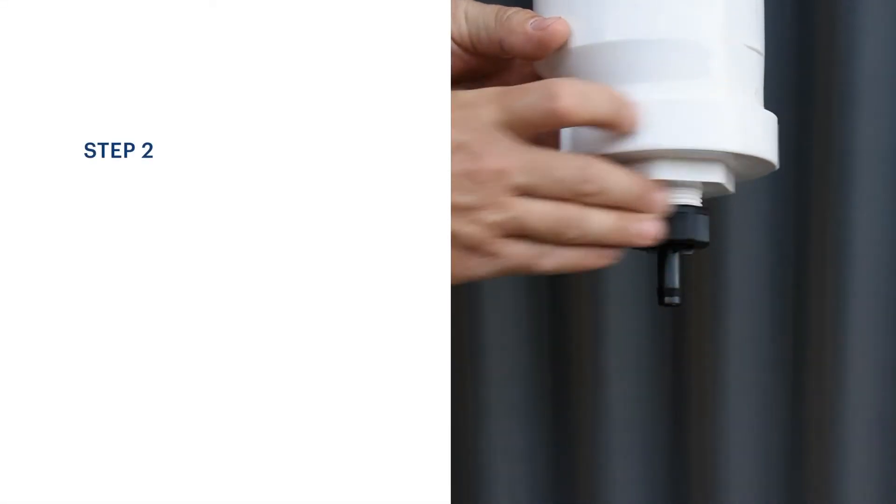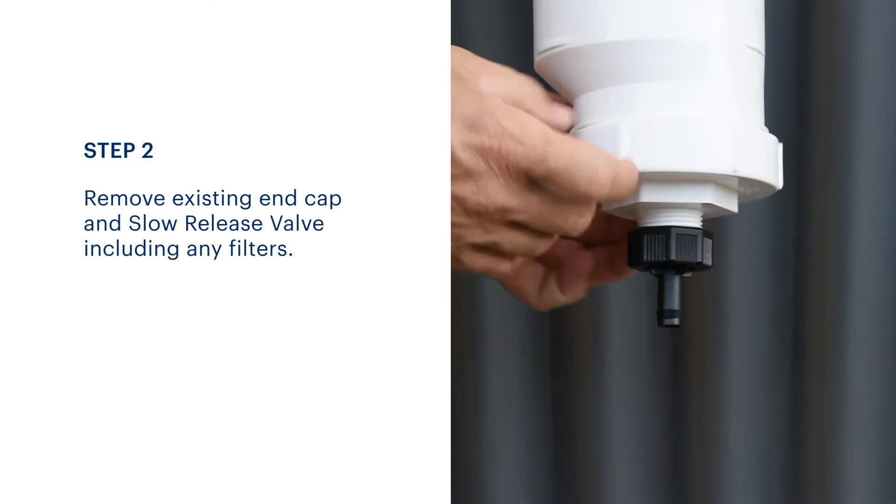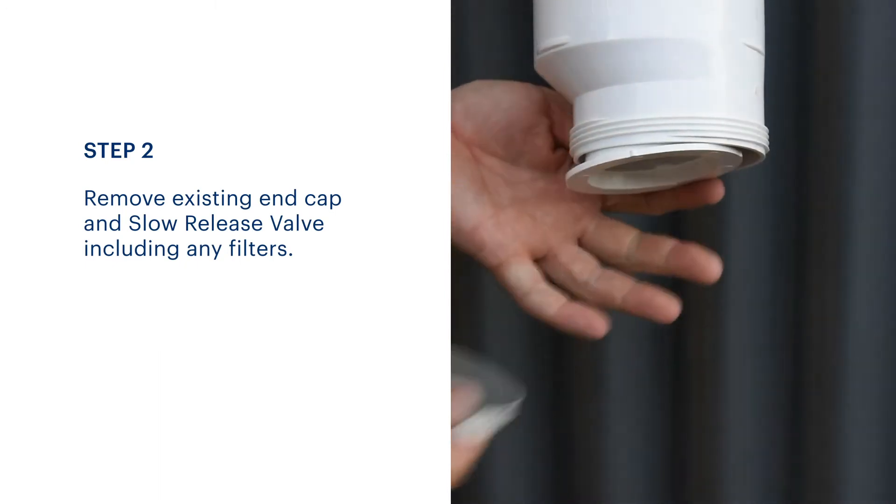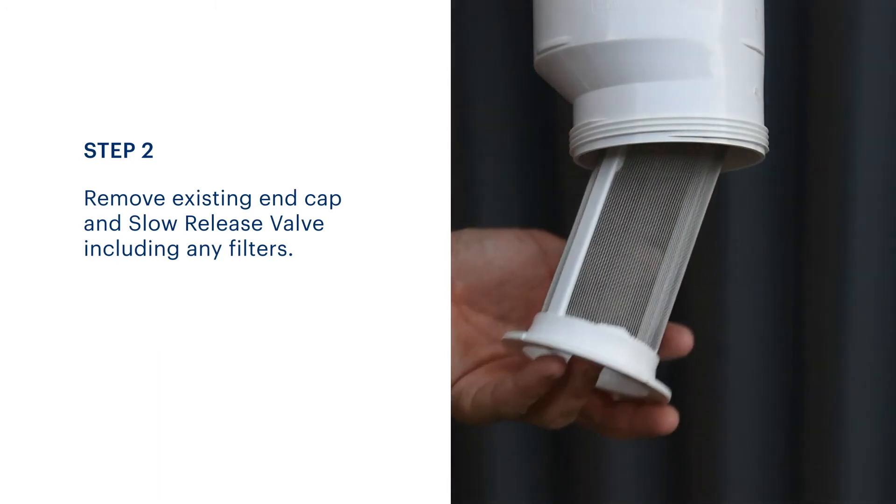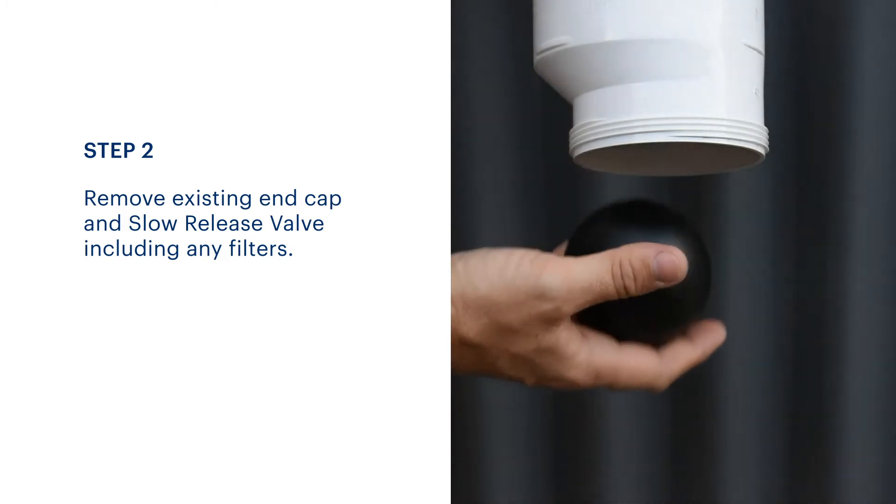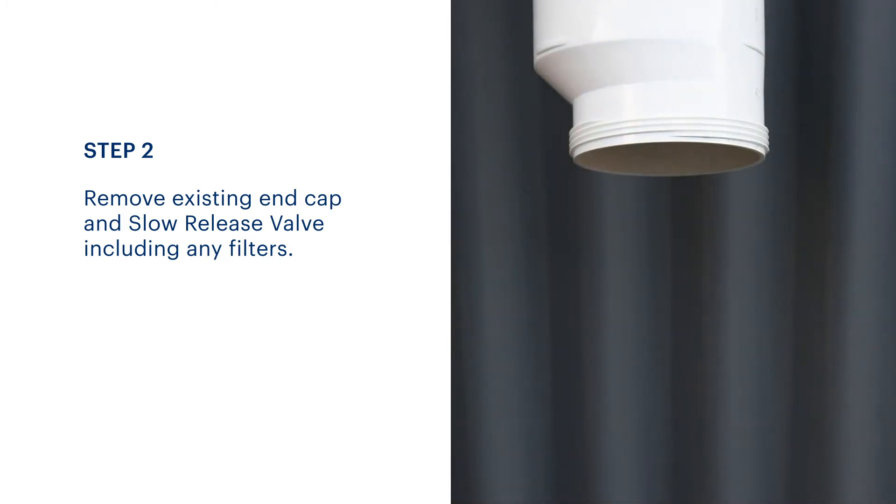Remove the screw cap assembly, including O-ring seal and any filters. If the diversion chamber is full of water, take care as it empties. Discard these items as they are no longer needed. These components will be replaced by the advance release valve assembly.